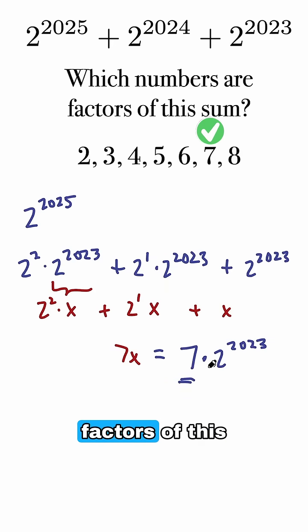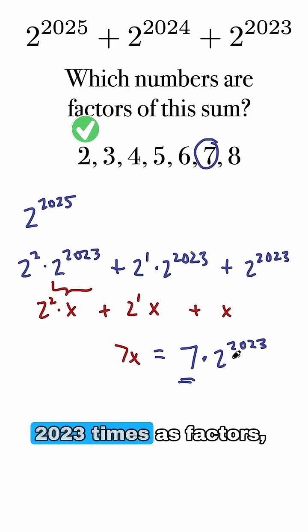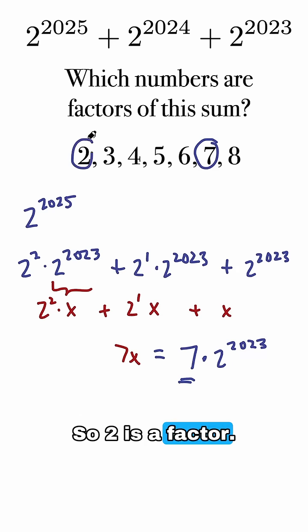Certainly 7 is one of the factors of this expression. So there's one of our answers. 2 is a factor because I've got 2 not just once, but 2023 times as factors, in fact. So 2 is a factor. 4, that's going to be a factor as well because we've got at least two 2s in this number.